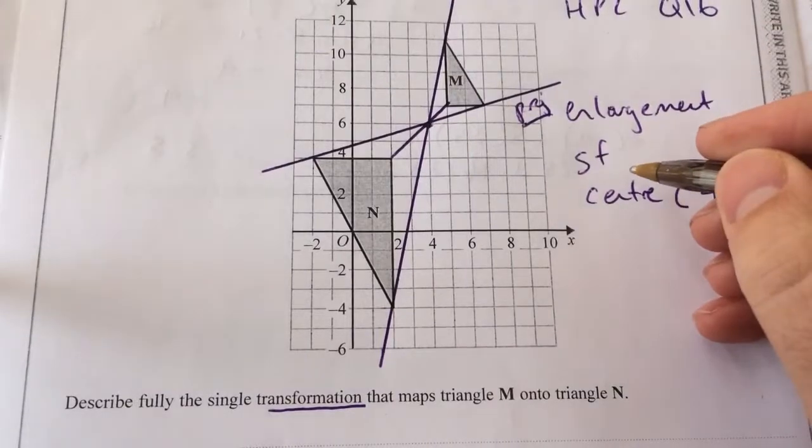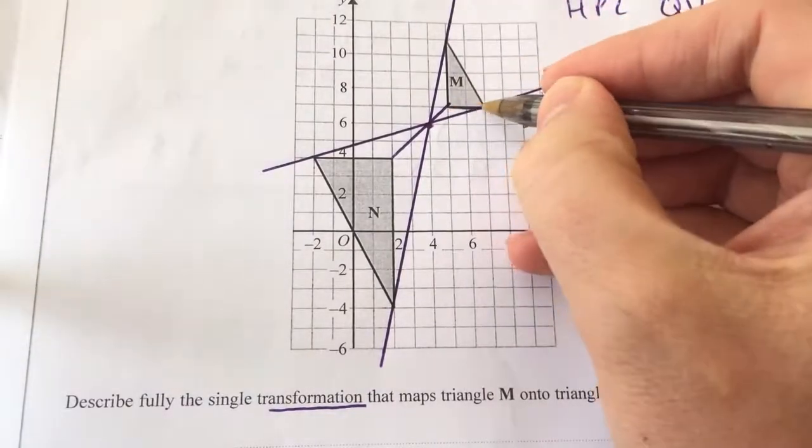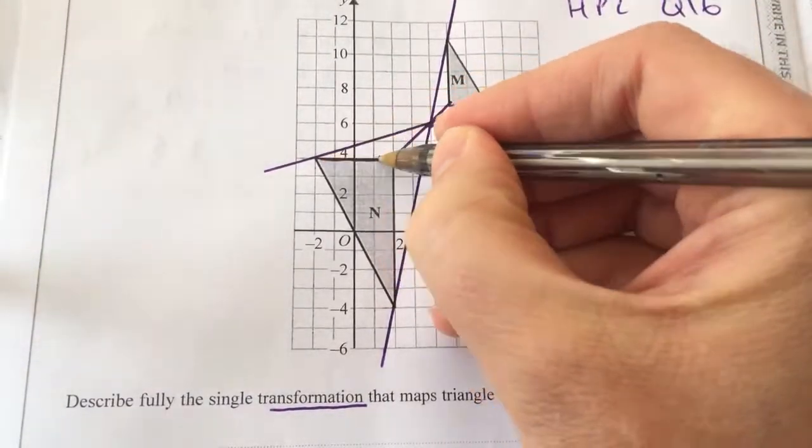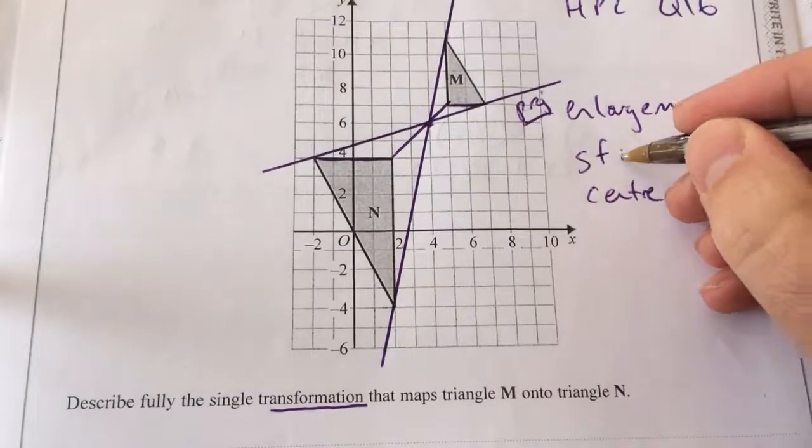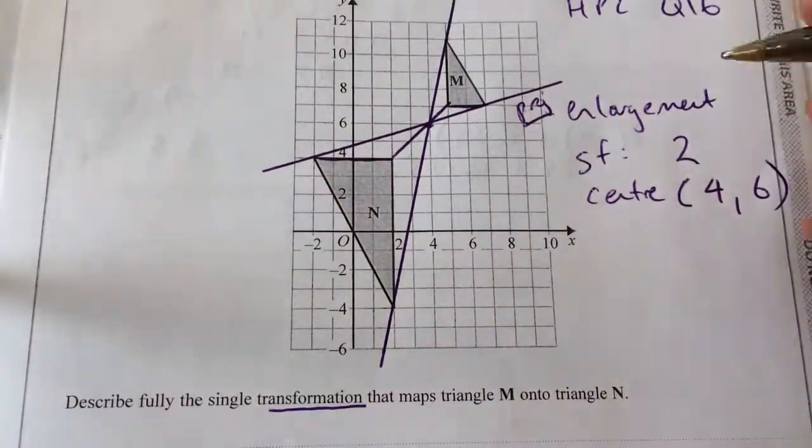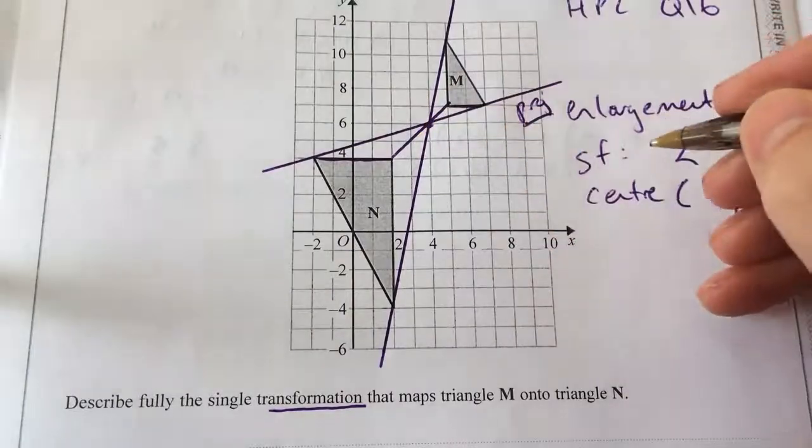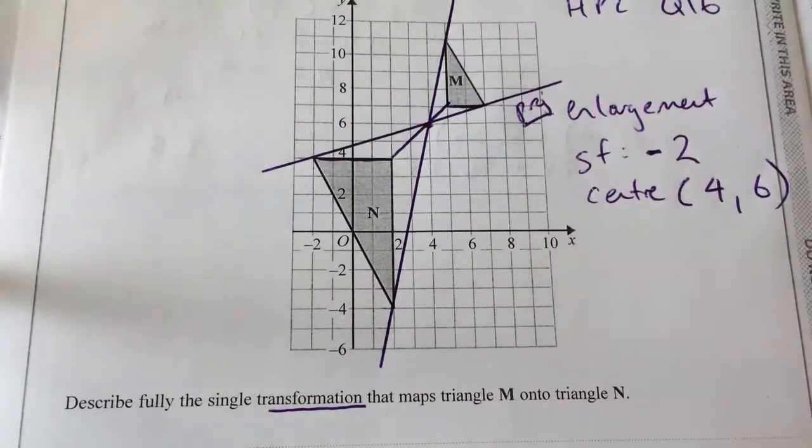Now to work out the scale factor, I can see that was 2, but that is 4. So it's definitely multiplying by 2. But because it's gone back through the center of enlargement, it's negative 2.